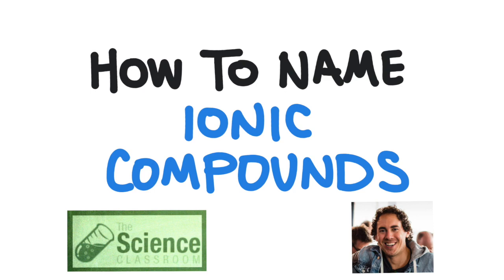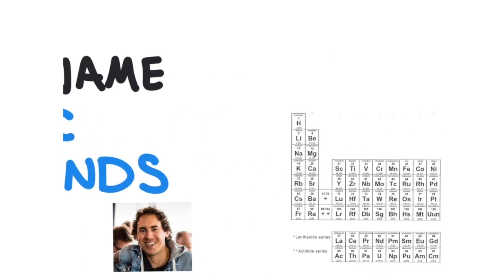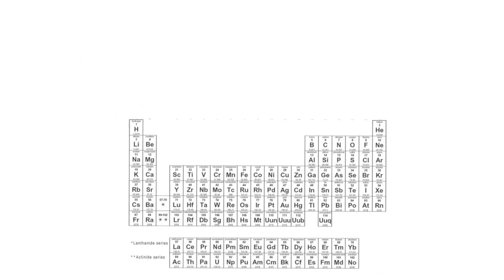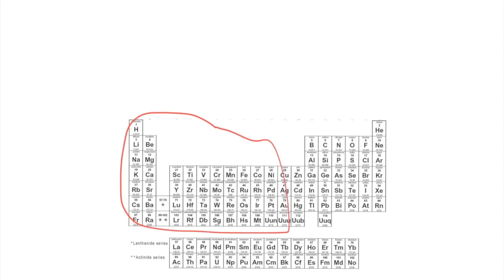In this video we're going to talk about naming ionic compounds. Let's first do a quick review of what an ionic compound is. There's a video linked in the description with a more detailed description of ionic compounds and how ions form. An ionic compound forms when a metal — those elements on the left side of the periodic table — bonds to a non-metal.